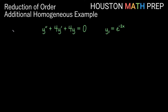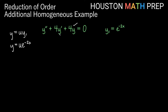Remember, the first thing we'll think is that our solution is going to equal u — some function of x we call u — times the y1 function of x that we already know. So our general solution is going to look like this. In this instance we will say that y is equal to u times e to the negative 2x. That will give us a substitution.